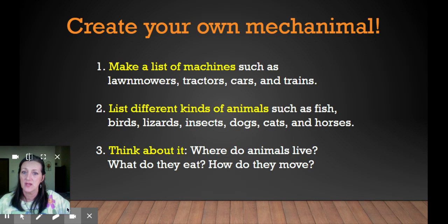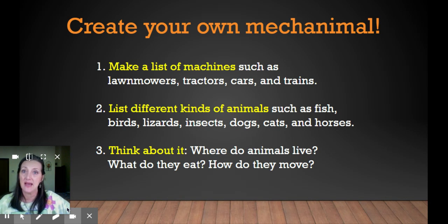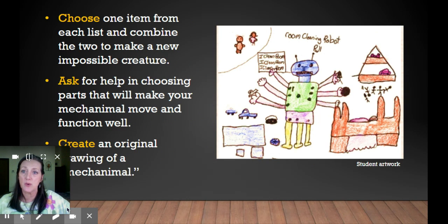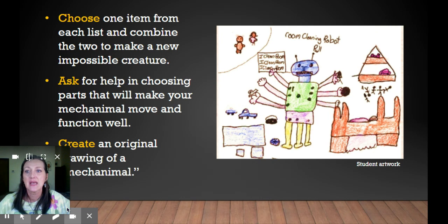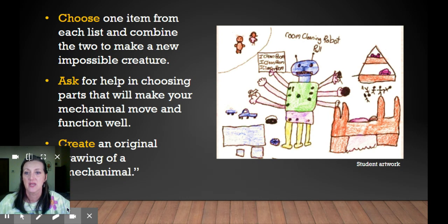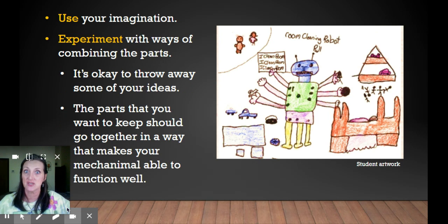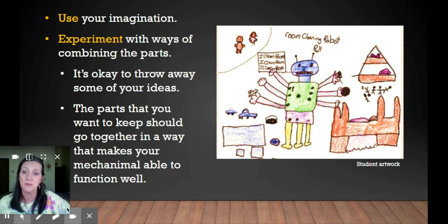Three, think about it: where do animals live? What do they eat? How do they move? Choose one item from each list and combine the two to make a new impossible creature. Here's an example of student artwork for you to look at. Ask for help in choosing parts that will make your mechanical move and function well. Create an original drawing of a mechanical. Use your imagination. Experiment with ways of combining the parts. It's okay to throw away some of your ideas — the parts that you want to keep should go together in a way that makes your mechanical able to function well.